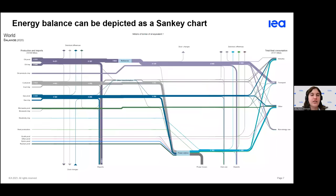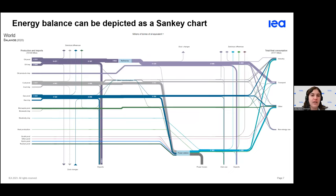In addition to the tabular format, Sankey diagrams are another way of displaying an energy balance. Energy products appear along the rows and flows are displayed along the top. Moving horizontally, you can see how the quantity of an energy product changes depending on the energy flow — how energy is split between exports and domestic consumption, transformed into other products, until it finally reaches total final consumption. This is a more visual format for displaying an energy balance.